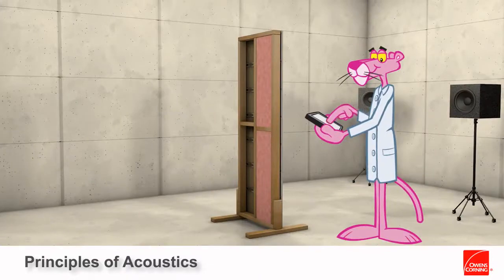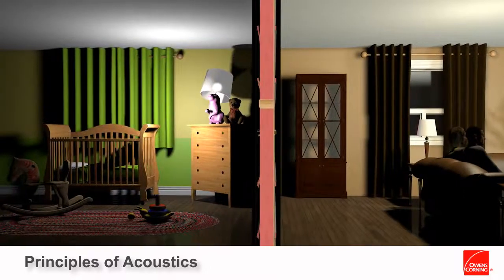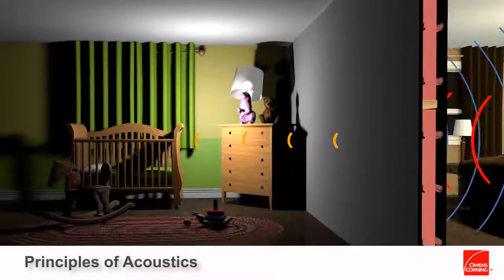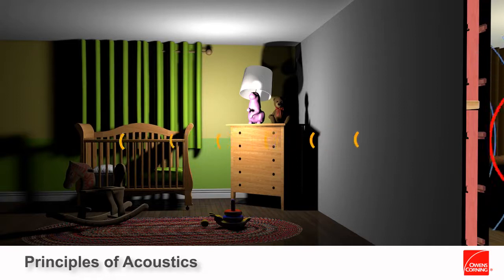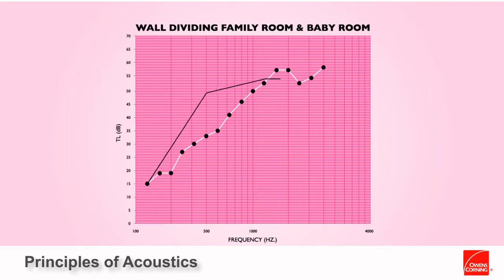STC ratings are determined through laboratory testing of a partition. It is constructed on resilient mounts to minimize the transmission of flanking noises by separating the sound source room from the receiving room. Sound is produced at specific sound pressure levels from within the source room and measured at reduced decibel levels within the receiving room. The difference in sound pressure level is measured at each of the 16 center band frequencies. These decibel differences, referred to as the transmission loss of the partition, are plotted against what is called the STC contour, and the STC rating is determined from this and other specific calculations.